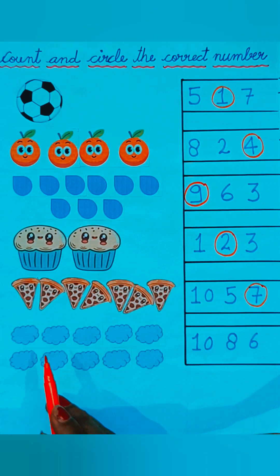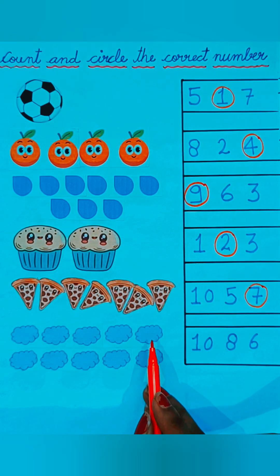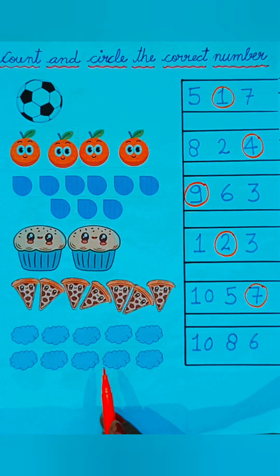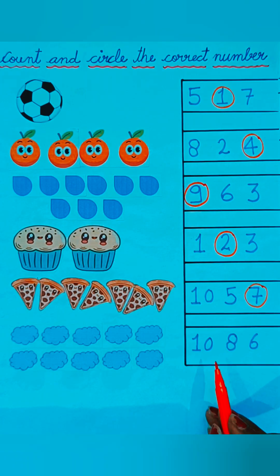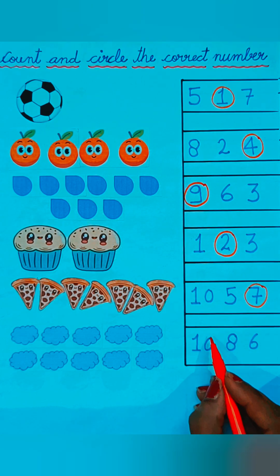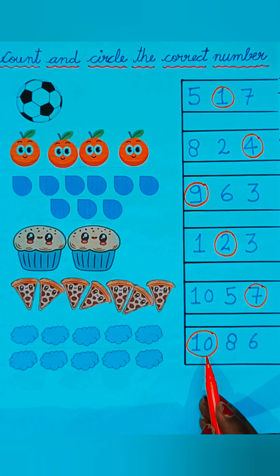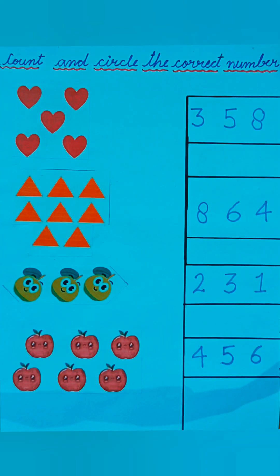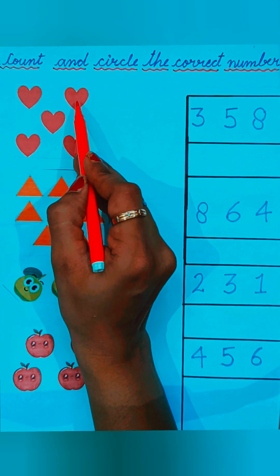Now see the clouds. One, two, three, four, five, six, seven, eight, nine, ten — ten clouds are given here. So on which number will we circle? Ten, eight, or six — we will circle on number ten because ten clouds are given here.